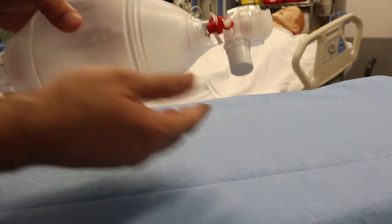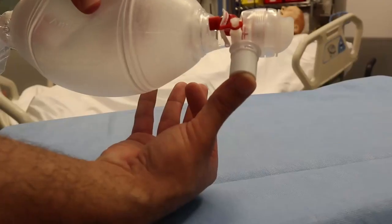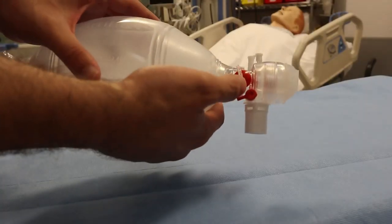If there is leak, it means the Ambo bag is not functioning well. After that you open the medication port. Now you will find there is a sound which is normal, it should be. Now you open the pressure limited valve and you have to hear the flow.